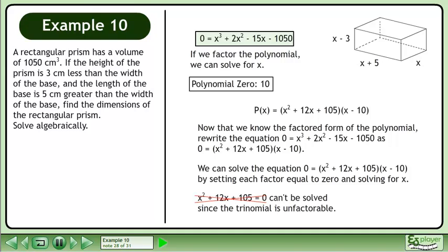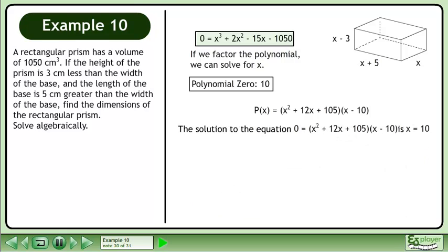x² plus 12x plus 105 equals 0 can't be solved since the trinomial is unfactorable. x-10 equals 0 yields an x value of 10. The solution to the equation is x equals 10.